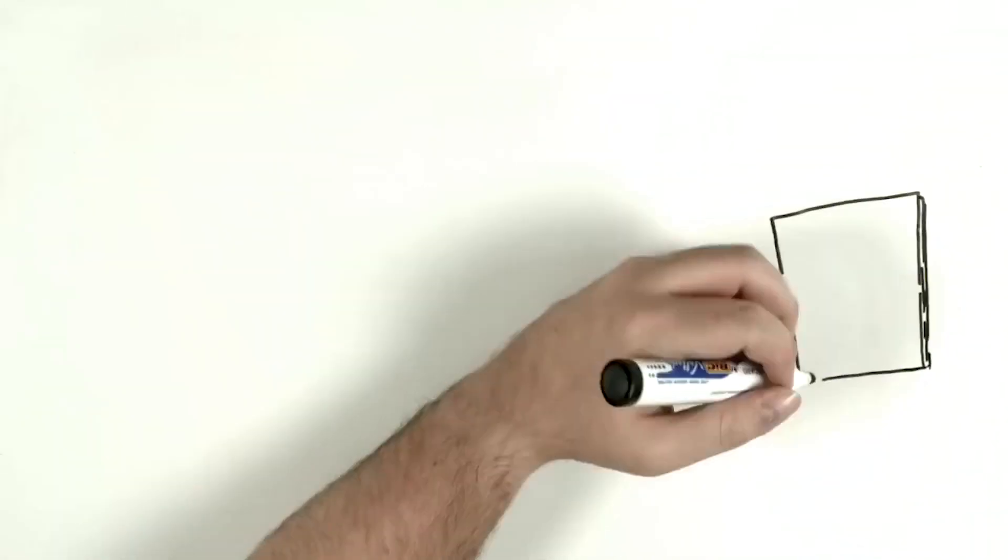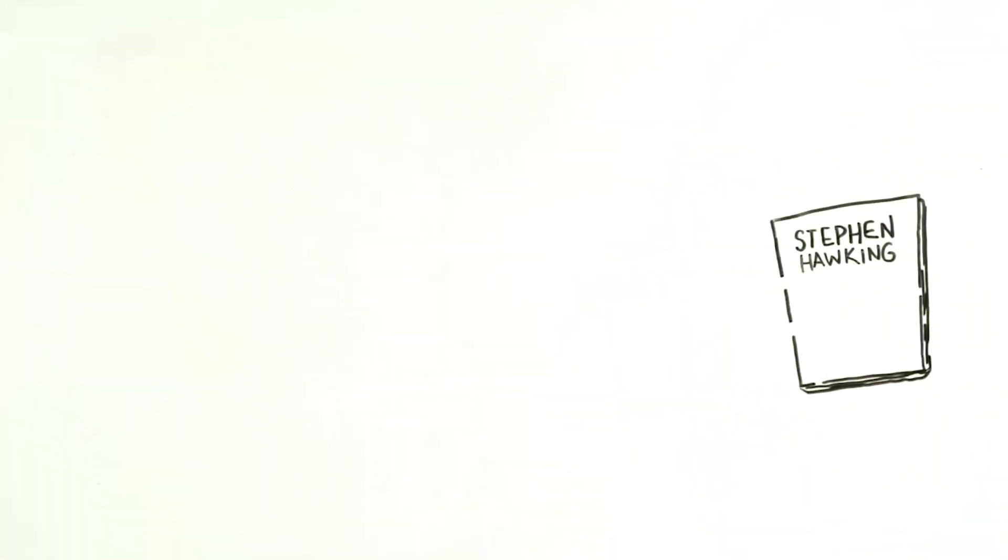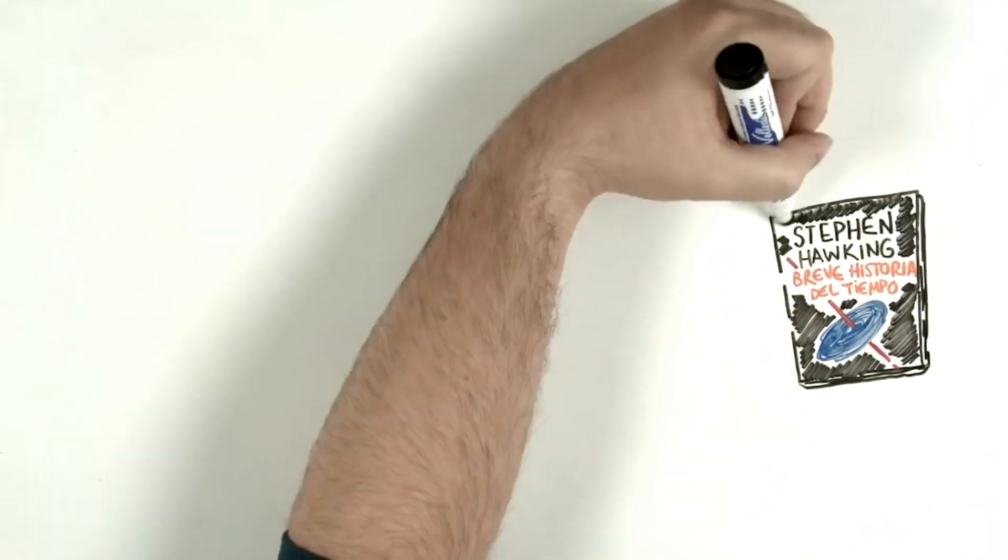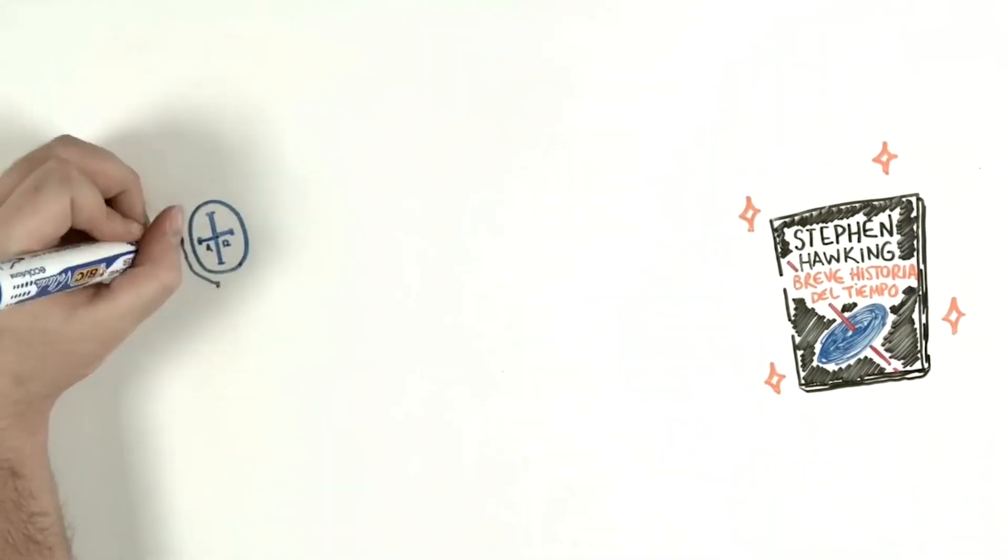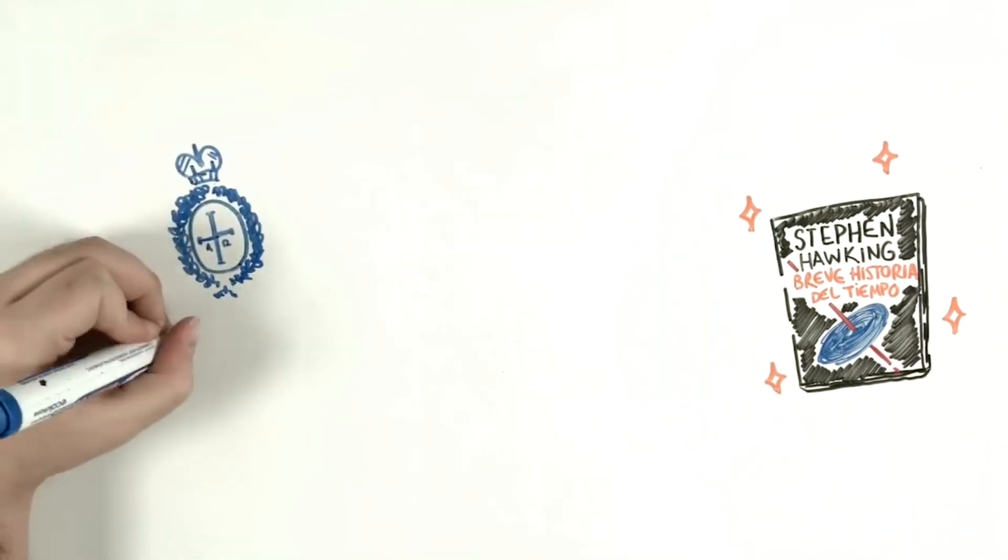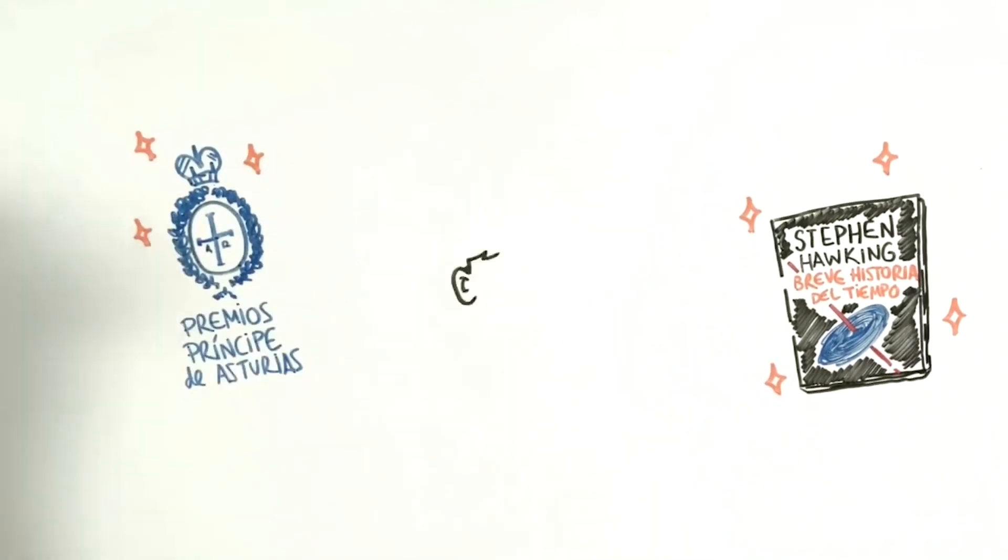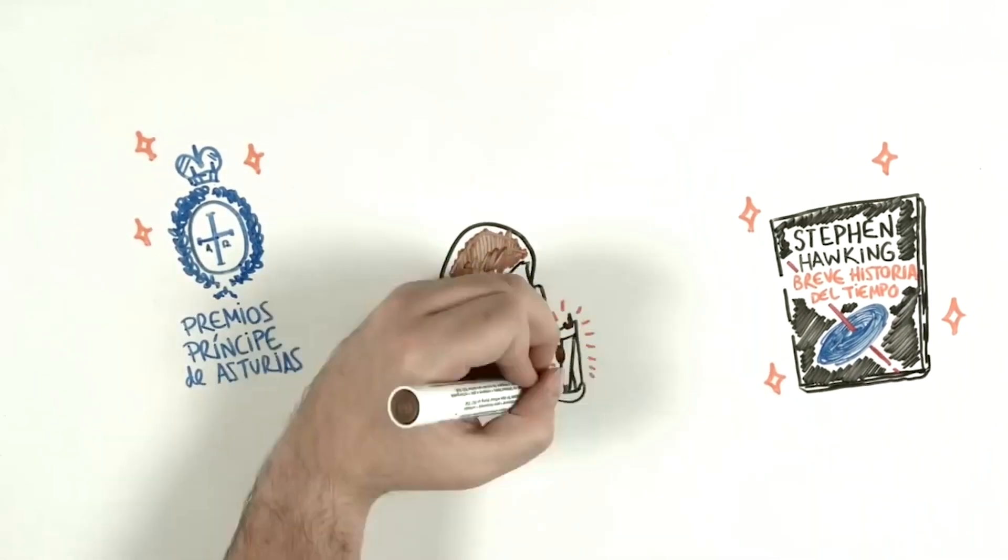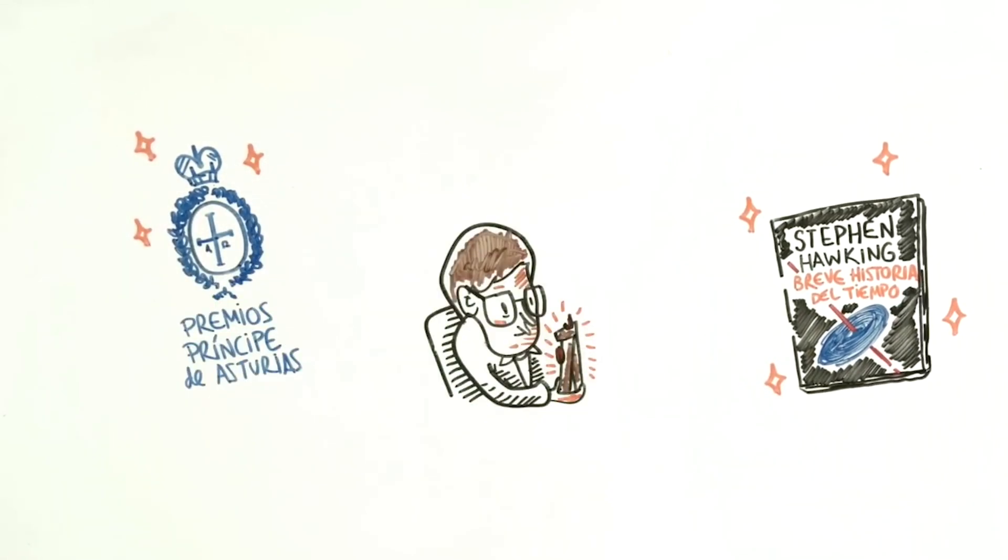One of his goals had always been to explain the origin of the universe in a simple manner. So he wrote A Brief History of Time, in which, with metaphors that could be understood by all audiences, not just scientists, he brings us closer to the mysteries of the universe. It sold more than 10 million copies, and after its publishing, it received the Prince of Asturias Award.